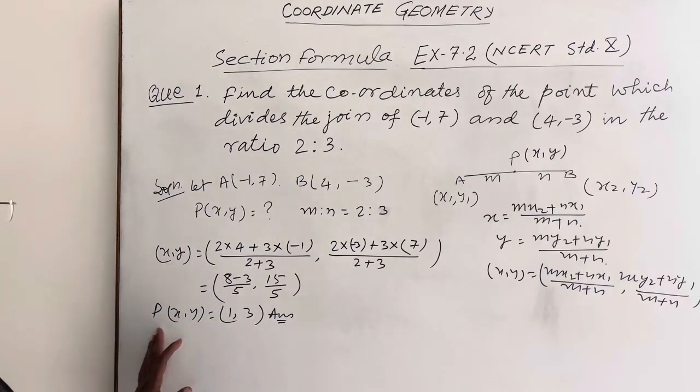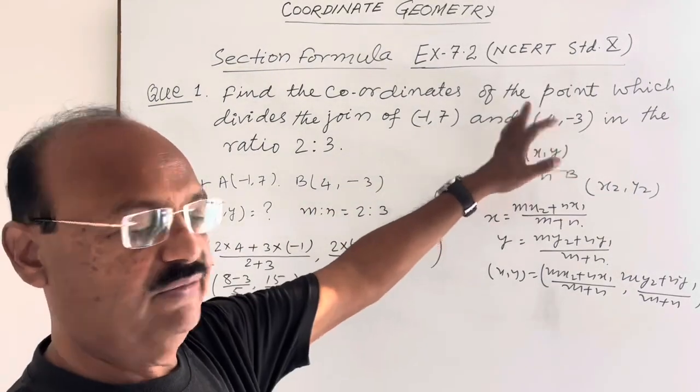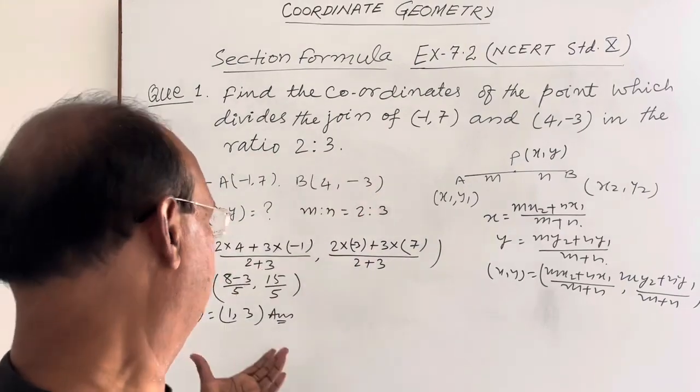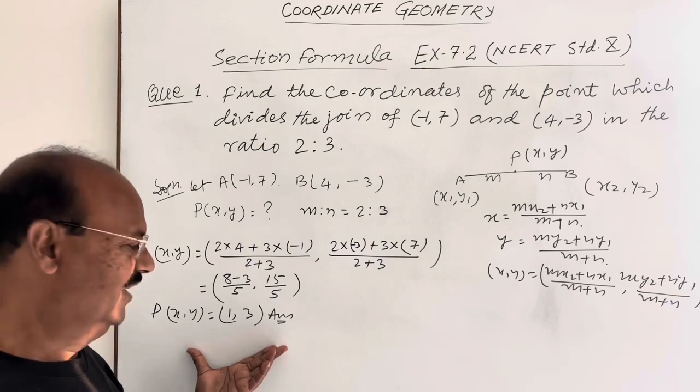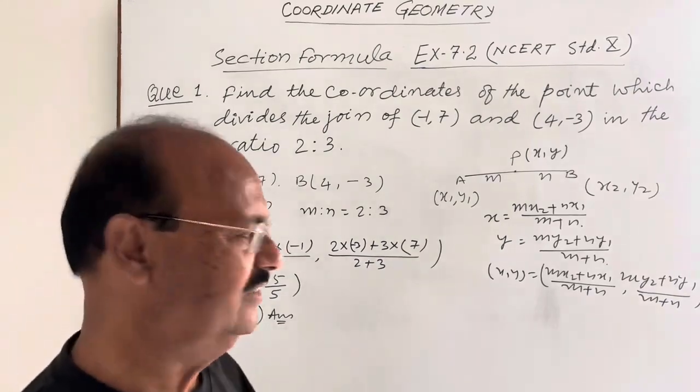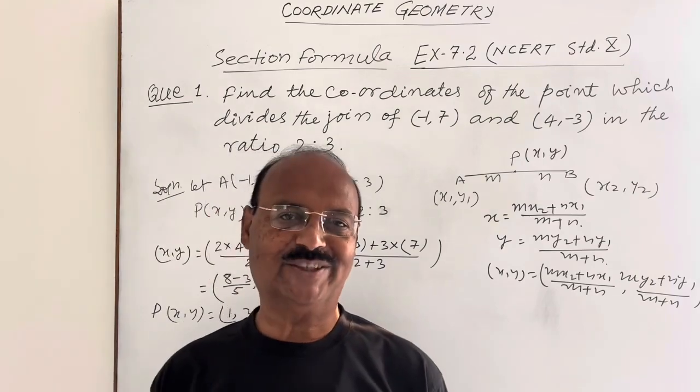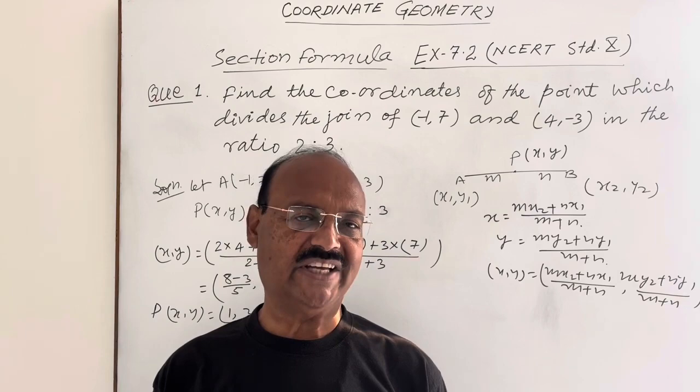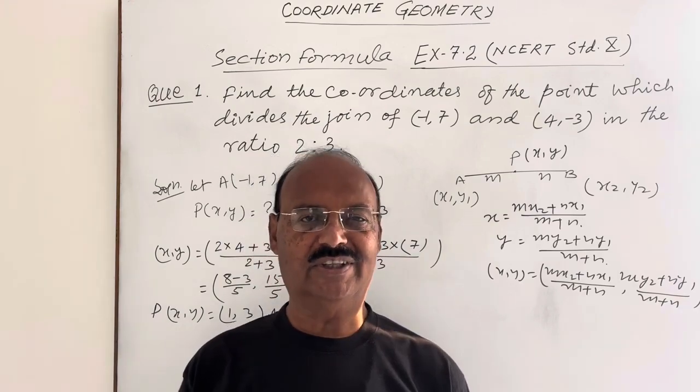As we have supposed P, which divides the line segment joining these two given points in the given ratio 2:3 internally. So this is the answer, very interesting, very simple. Hope you are enjoying learning mathematics here. Your likes are most welcome if you are liking these videos, and hope you have subscribed to this channel. Please share these videos with your friends also. We wish you all the best.